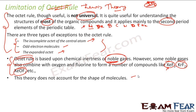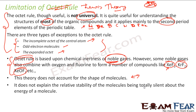Also, this theory is not able to explain the shape of molecules. Chemists using X-ray diffraction techniques have determined the shapes of molecules — tetrahedral, square pyramidal, bent, linear — which we will discuss in future slides. Lewis theory was not able to explain these shapes. It was also not able to explain the relative stability of molecules and is totally silent about the energy of molecules.